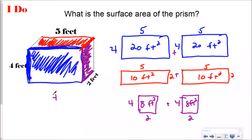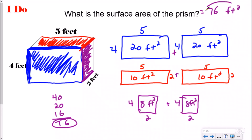Now I know the area of each individual side — the front, the back, the top, the bottom, and the two sides. All I need to do is add them all together. 20 plus 20 is 40. 10 plus 10 is 20. 8 plus 8 is 16. When I add all of these together, I get a total surface area of 76 feet squared. That means if I made an array on every side, I would need 76 squares to cover the entire outside — the surface of this prism. All you're doing is finding the area of six different rectangles or squares and then adding them together.